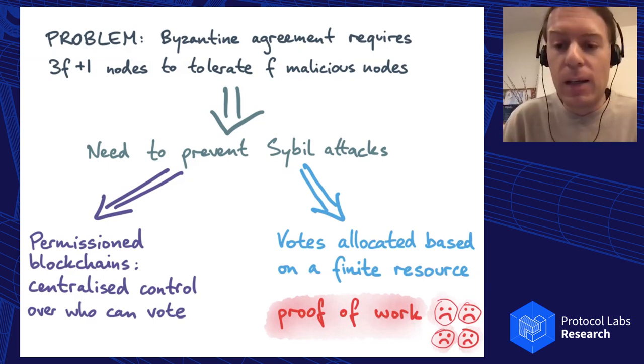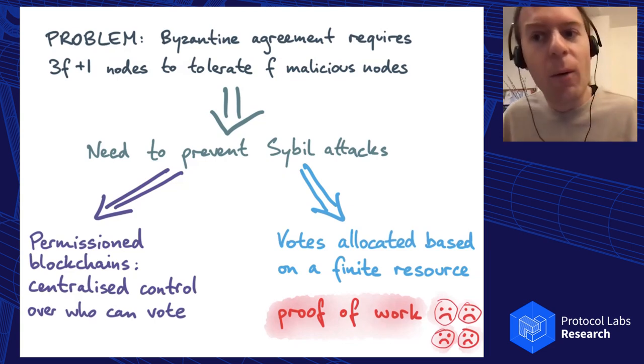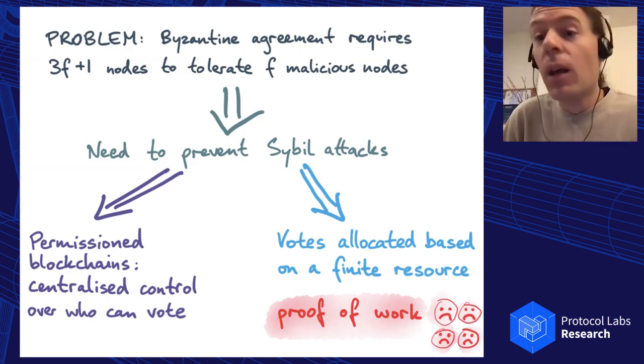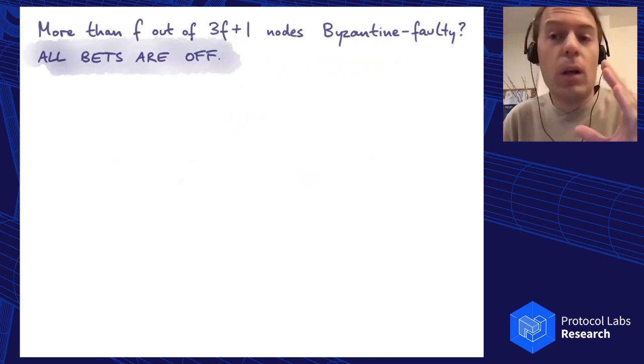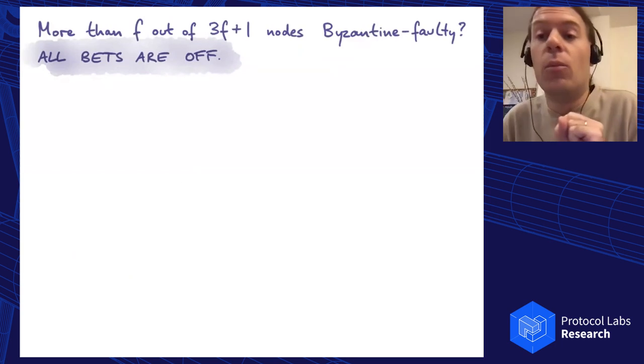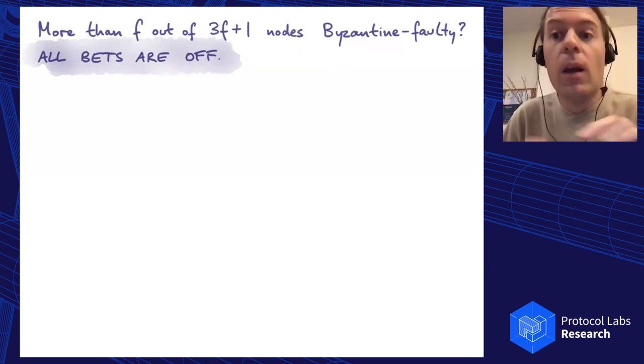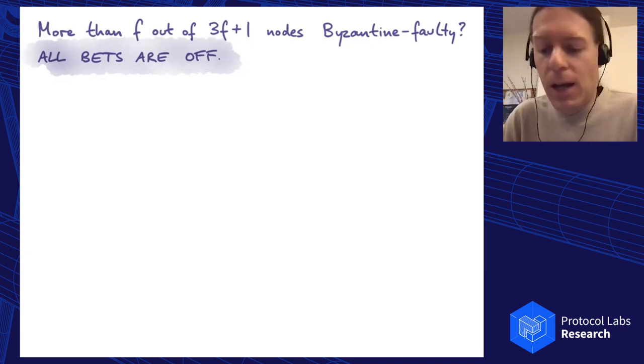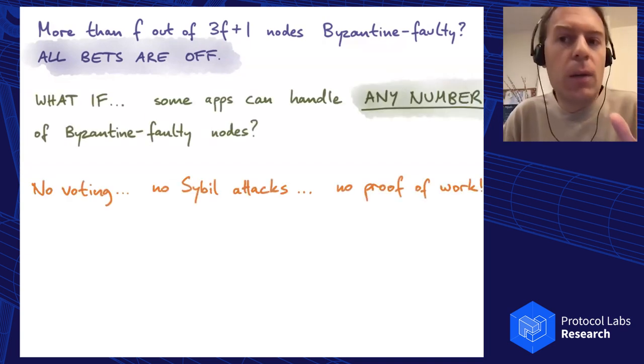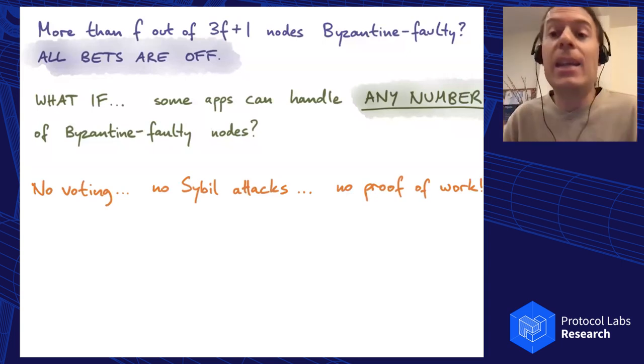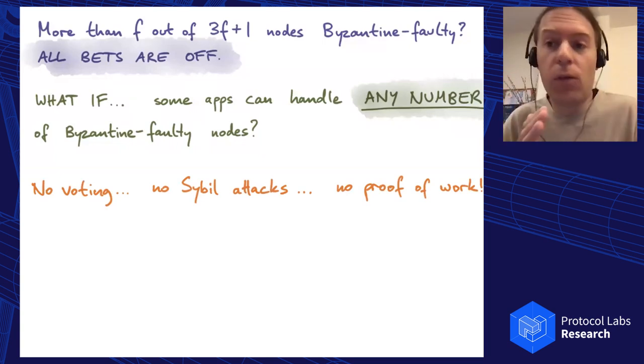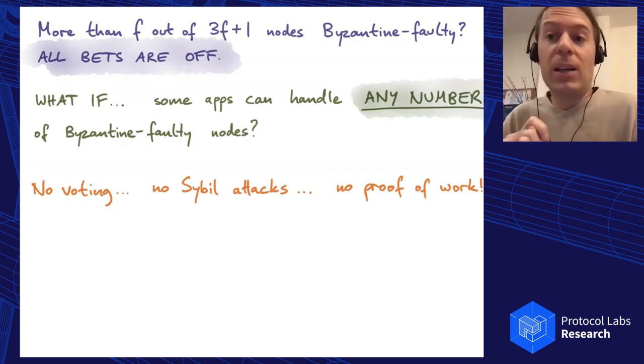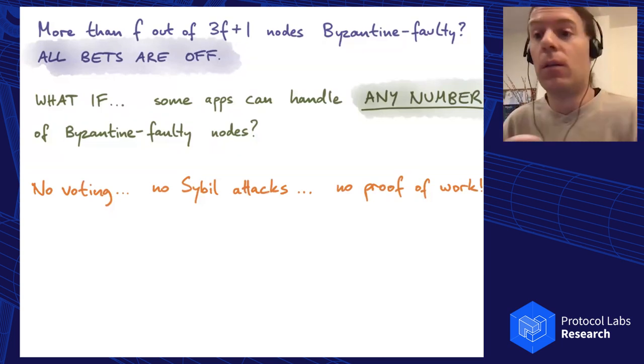There are not enough sad faces in the world to express how I feel about proof of work, but I can see the need for wanting a permissionless system. This has led us to asking, we know that for Byzantine agreement, if you exceed the number of F faulty nodes, then all bets are off. The algorithm cannot guarantee any safety or liveness properties. But maybe there are some types of applications that can actually tolerate any number of malicious nodes. We don't need to assume that less than one third of nodes is faulty, or 51%, or anything like that.